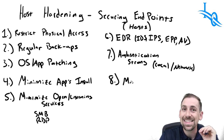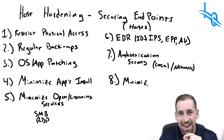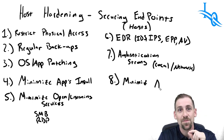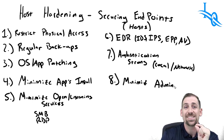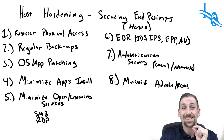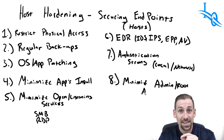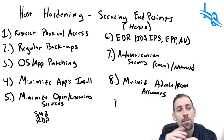Number eight is minimizing the number of administrator and root accounts. We want to have the minimum number of administrator or root accounts as possible so that these accounts are less likely to be compromised, reducing our footprint as part of host hardening.